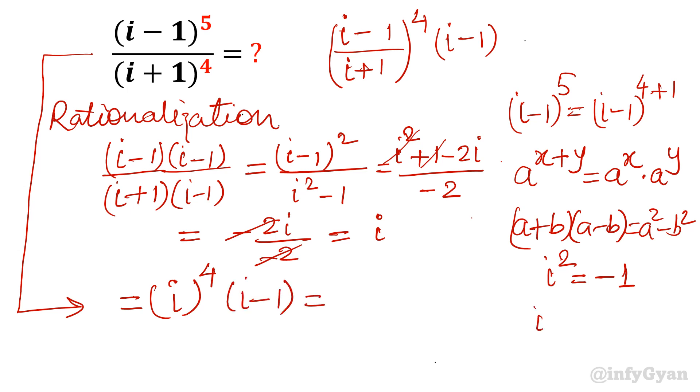Now iota^4 would be iota^2 times iota^2. So -1 times -1, that will be +1. So this is +1 times (iota minus 1). Our final answer becomes iota minus 1.